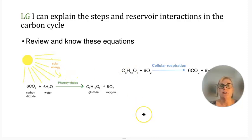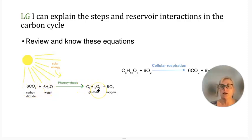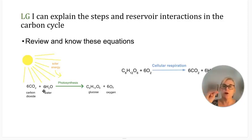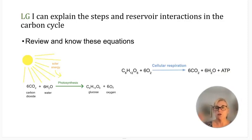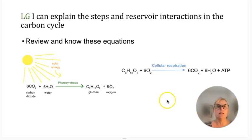You need to know photosynthesis and cellular respiration in terms of inputs and outputs. For the AP exam, you need to know that carbon dioxide and water are inputs in photosynthesis, and that plants and other producers create glucose and oxygen as outputs. For cellular respiration, sugar and oxygen are the reactants, and the products are carbon dioxide, water, and energy. It's really important to get these things in your head.